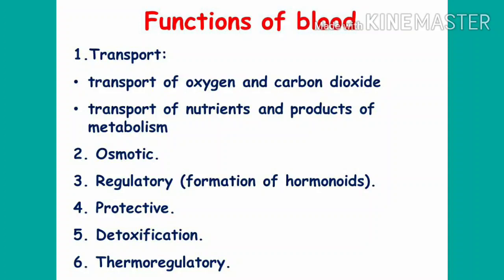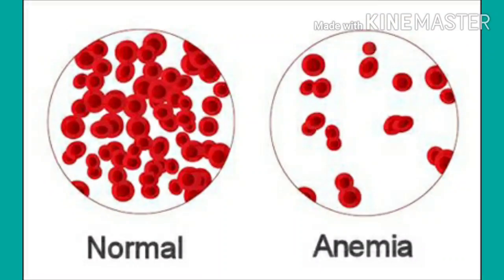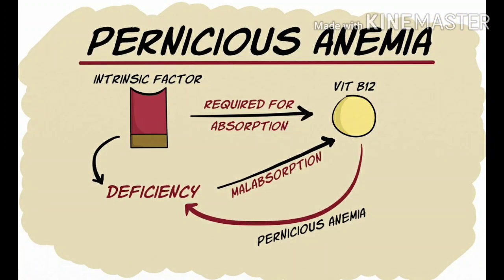The formation of blood is called hemopoiesis. Anemia refers to any condition in which there is an abnormally low hemoglobin concentration and/or red blood cell count. The most common type is iron deficiency anemia, caused by deficiency of iron, which is an essential component of the hemoglobin molecule. Another type is pernicious anemia, which is caused by an inadequate amount of vitamin B12 in the body, which is needed for red blood cell maturation.